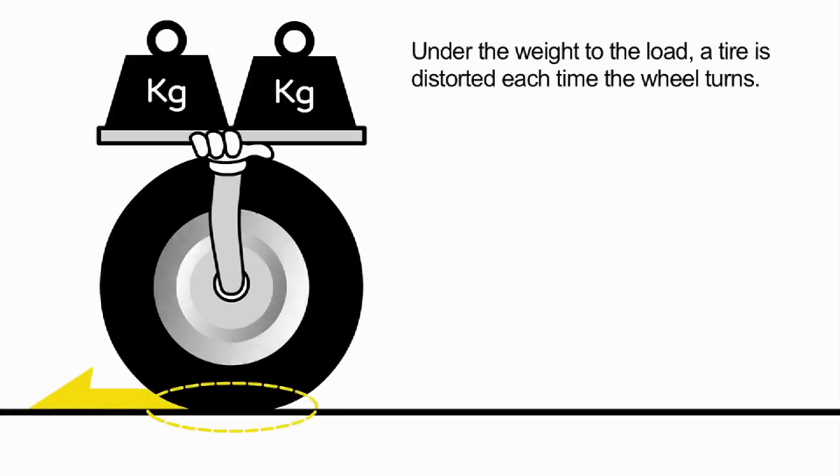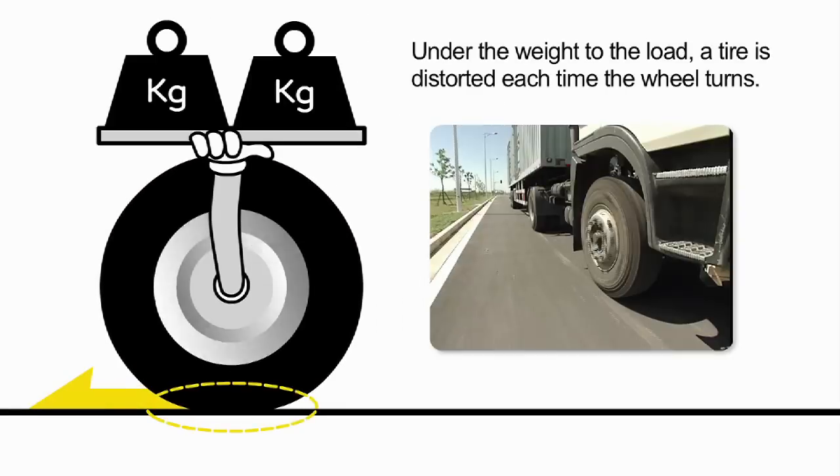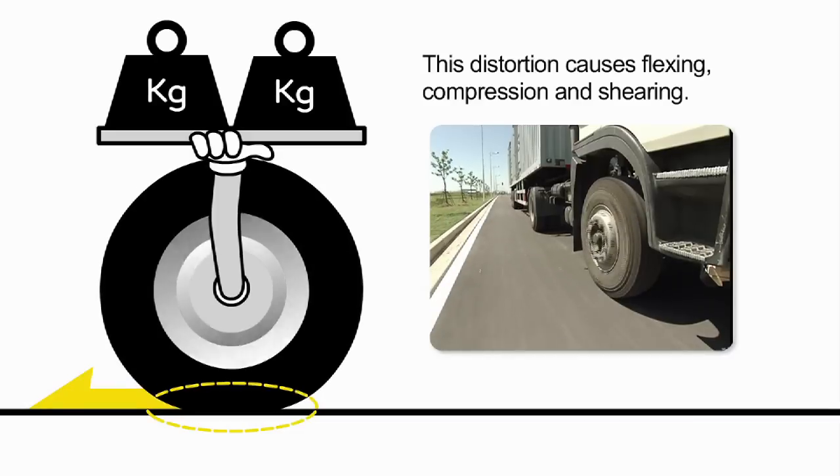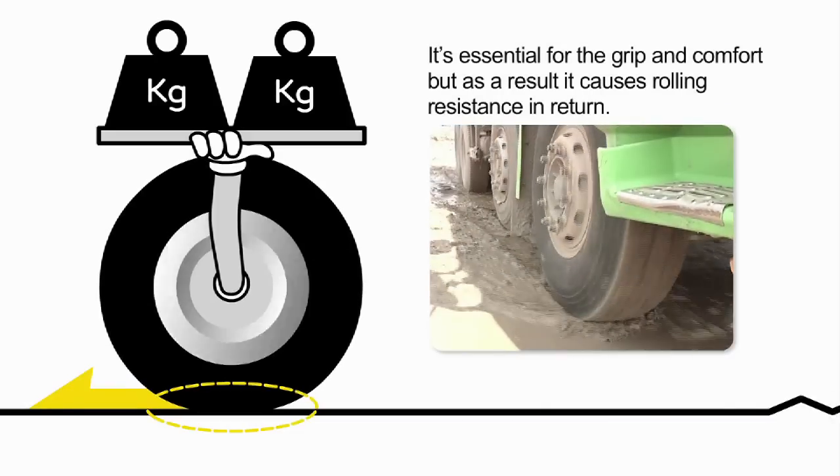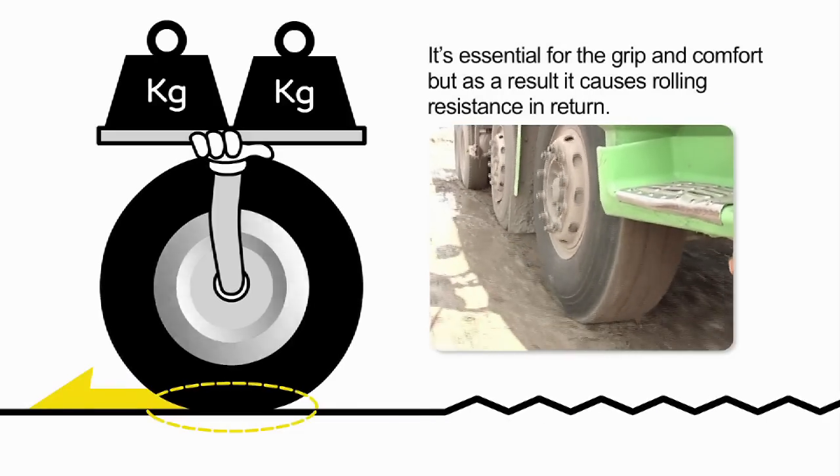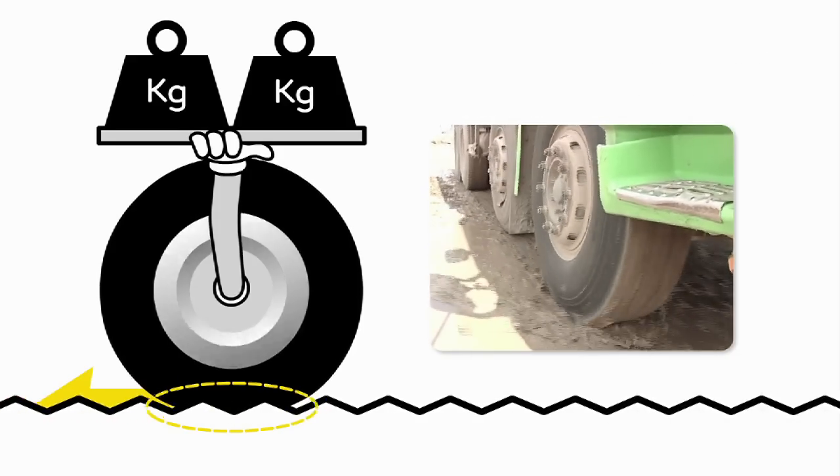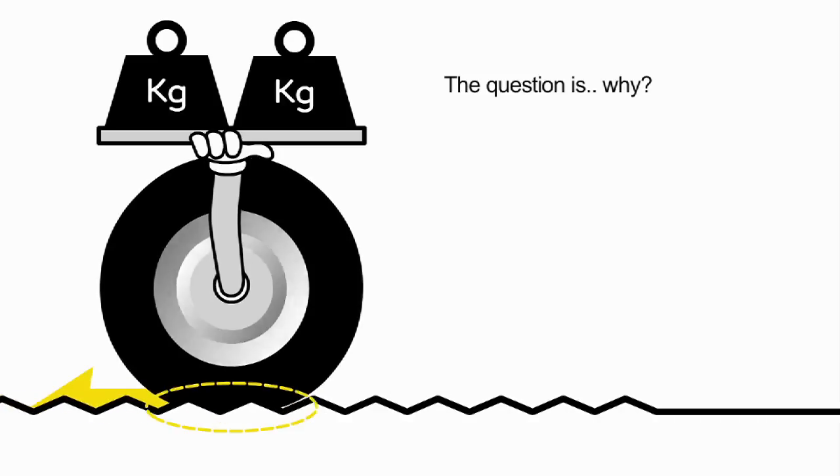Under the weight of the load, a tire is distorted each time the wheel turns. This distortion causes flexing, compression, and shearing. It's essential for the grip and comfort, but as a result, it causes rolling resistance in return. The question is, why?